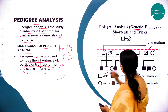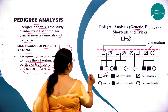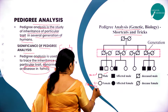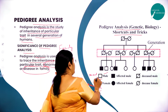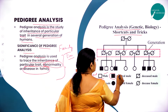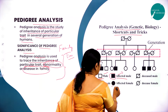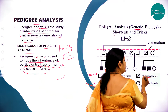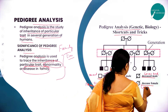In pedigree analysis, we use certain symbols. A square represents a normal male, and a circle represents a normal female. A completely shaded square is an affected male, and a completely shaded circle is an affected female. A line over the square or circle indicates a carrier — so a carrier male and a carrier female.